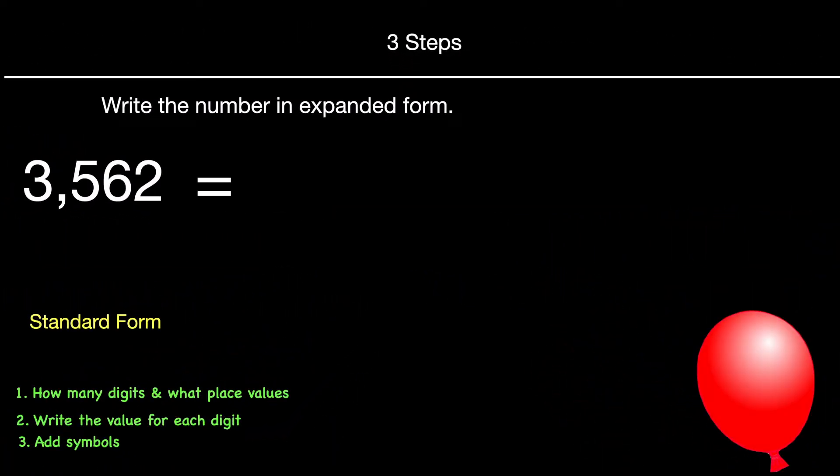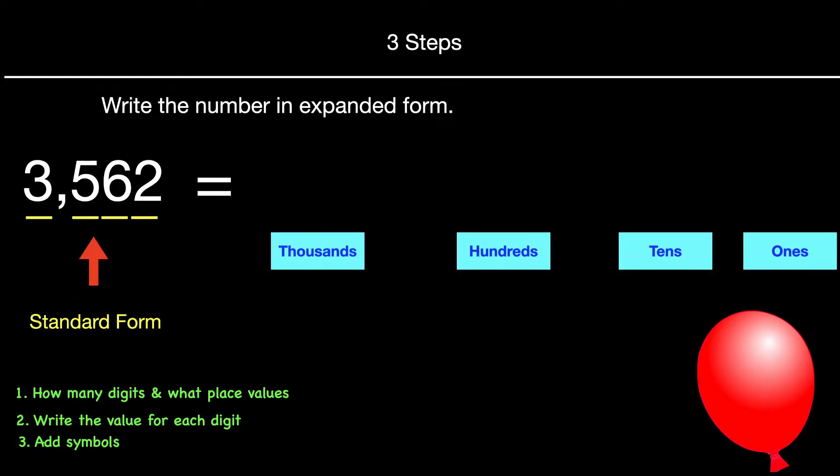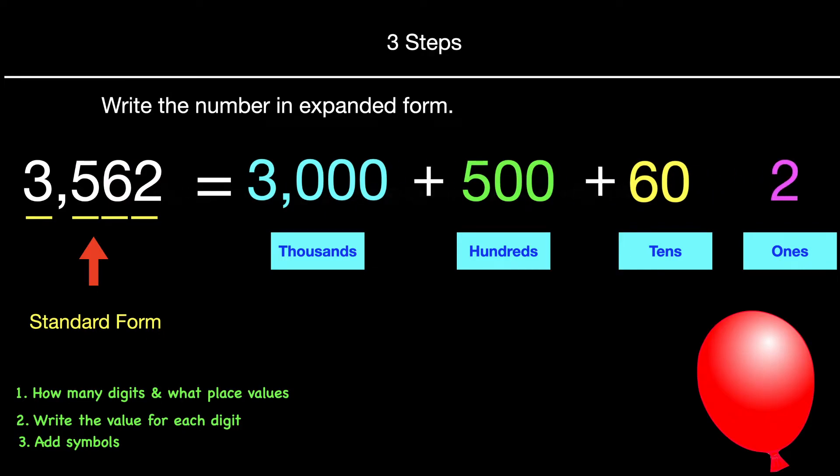Write the number in expanded form. So 3562 right now is in standard form. We want to make it larger in expanded form. First step is we will count the digits, which is four. That will give us four place values. And now we're going to write the value for each digit. And usually we'll start with the greatest value. So the three is 3000, 500, our six tens is 60, and then our two ones. Last step we just need to add our addition symbols and we get 3000 plus 500 plus 60 plus 2. That is our number in expanded form.